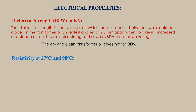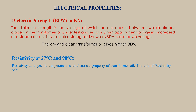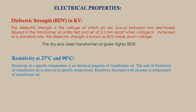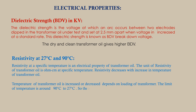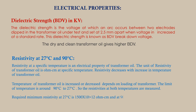Resistivity at 27°C and 90°C: resistivity at a specific temperature is an electrical property of transformer oil, with units of ohm·centimeter. Resistivity decreases with increase in temperature. The temperature of transformer oil increases or decreases depending on the loading of the transformer. Since the temperature range is 27°C to 90°C, resistivity is measured at both temperatures. The required minimum resistivity at 27°C is 1500 × 10¹² ohm·cm, and at 90°C is 35 × 10¹² ohm·cm.